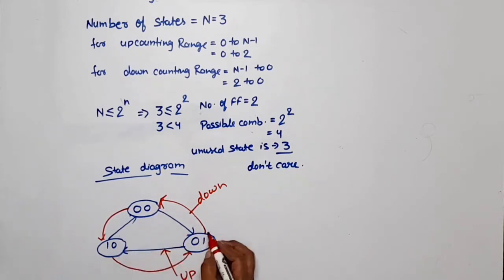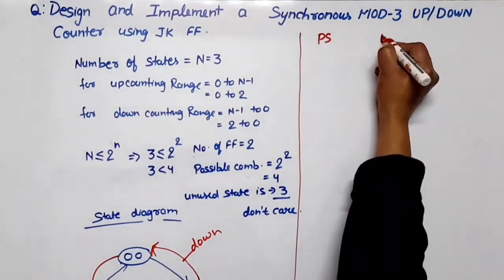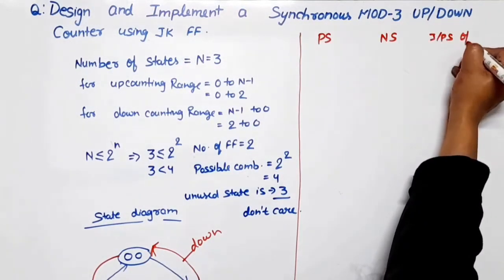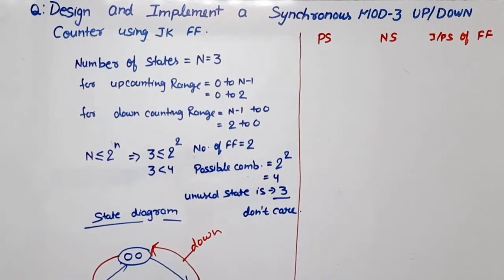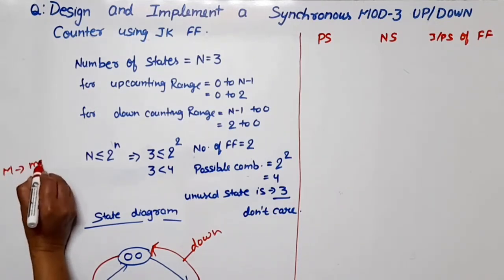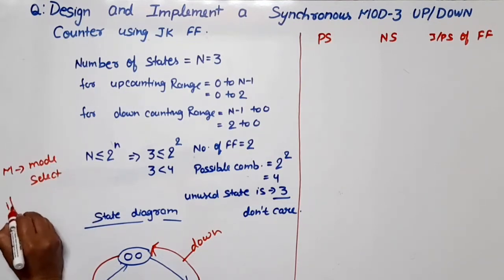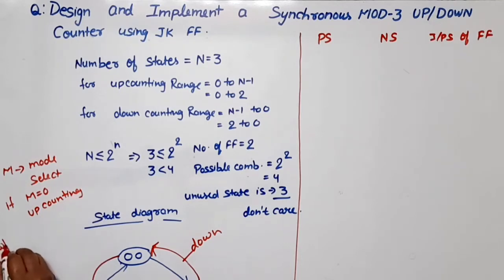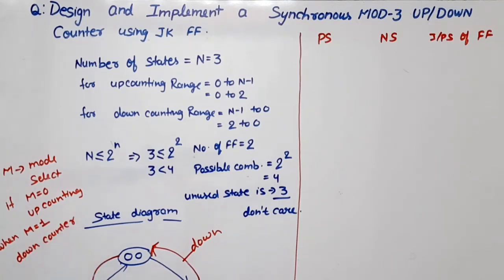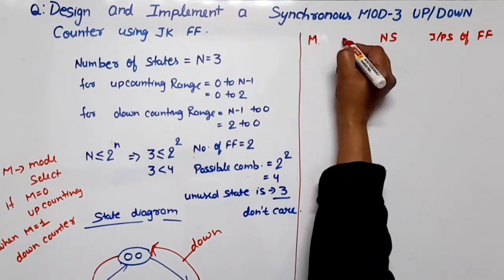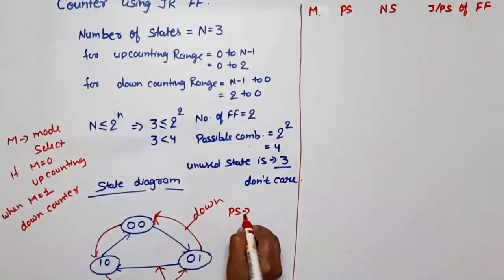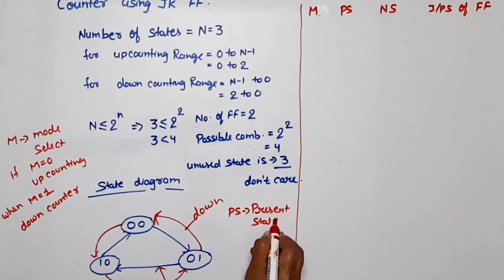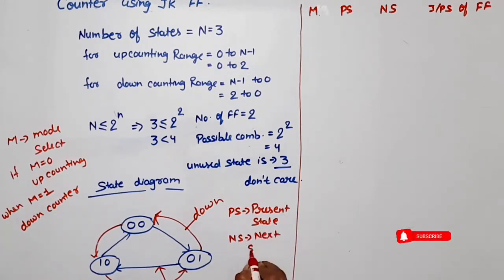Now we will create the state table. In the state table, we have present state, then next state, then the inputs of the flip-flop. Since we have both up and down counting, we take one mode select M. If M is equal to 0, the counter will do up counting. When M is equal to 1, this counter works as a down counter.